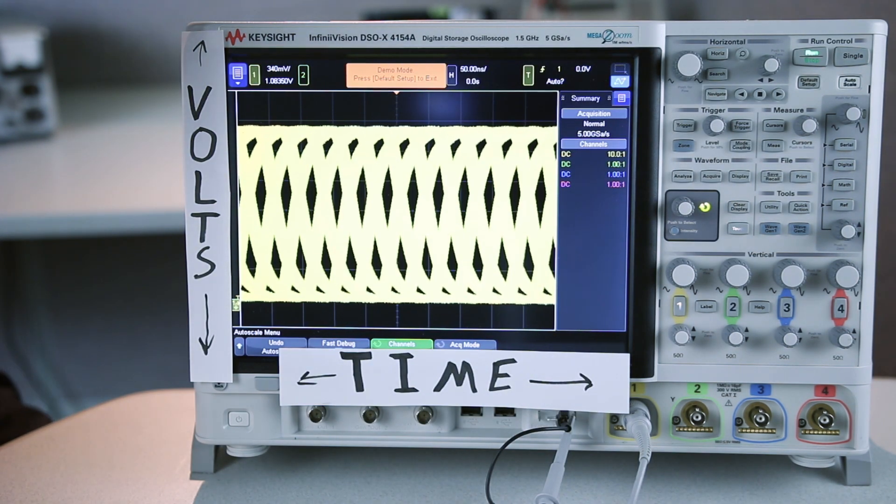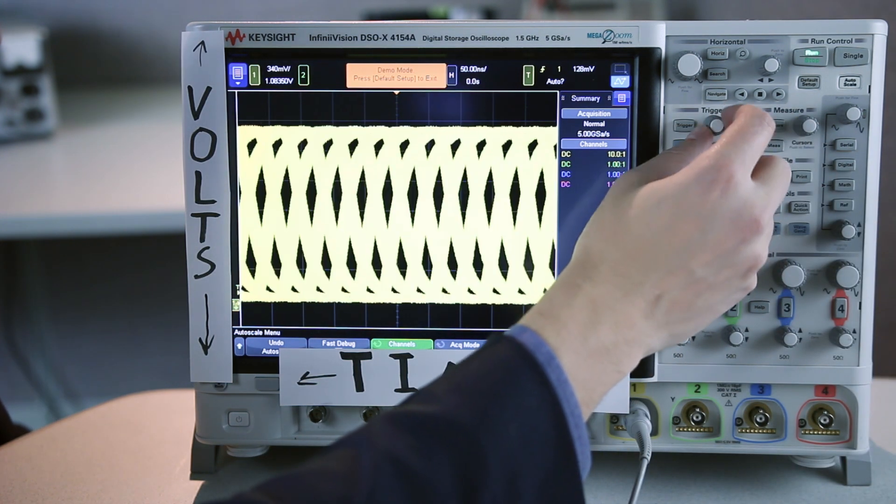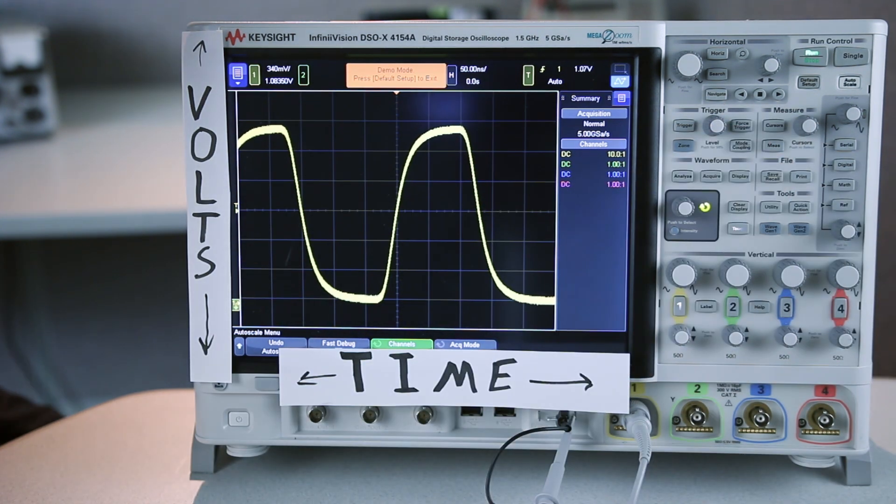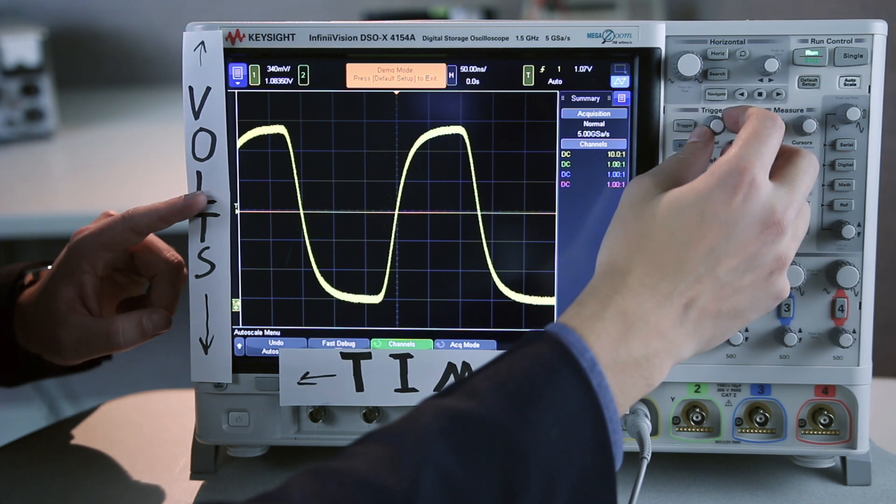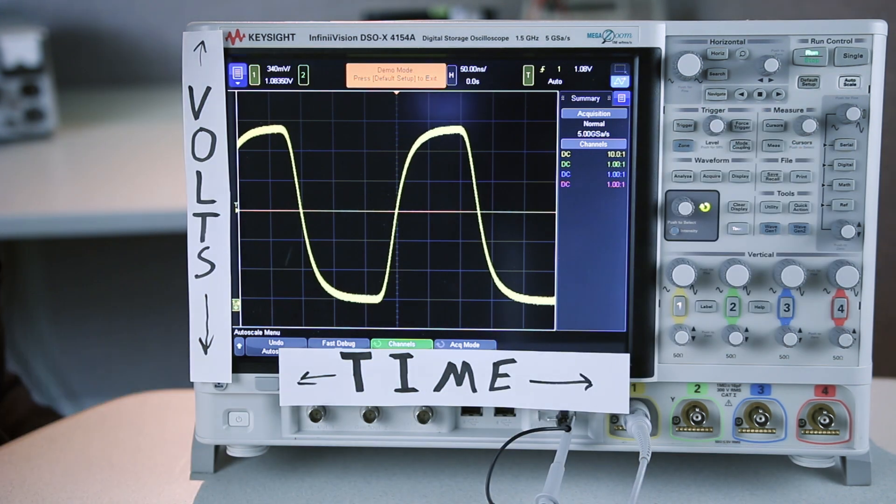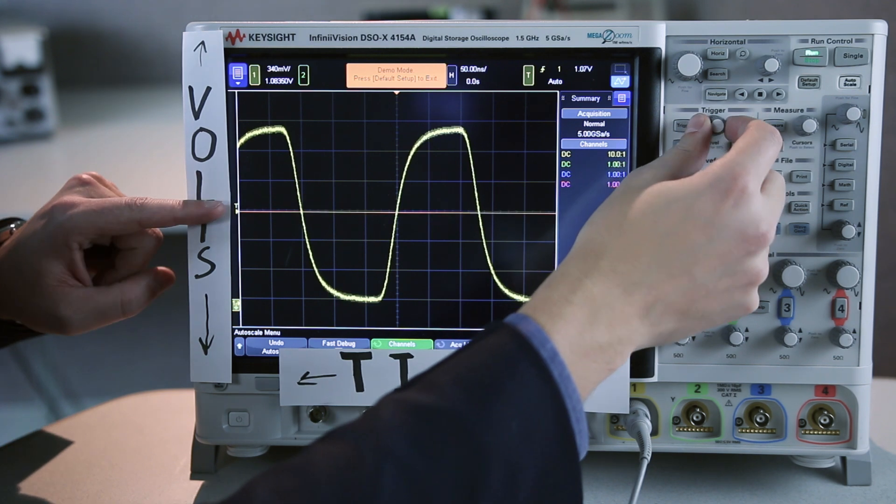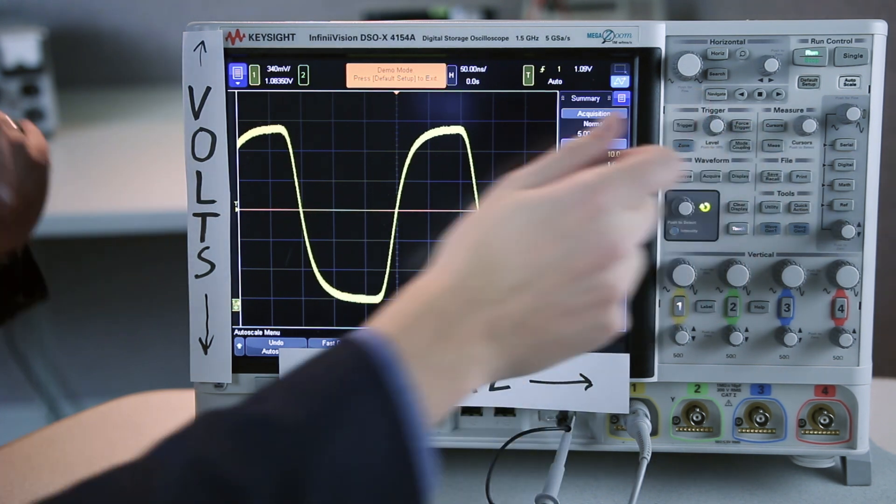Second, you want to make sure your trigger level is set up correctly. The trigger level is controlled by this little knob in the trigger section. We talked earlier about how the scope takes snapshots of the signal. Essentially, the trigger level is like your shutter button on a camera. It tells the scope when to take a snapshot. The scope is always going to boot in a mode called edge trigger mode. Anytime a signal comes and touches that line, the scope is going to trigger.